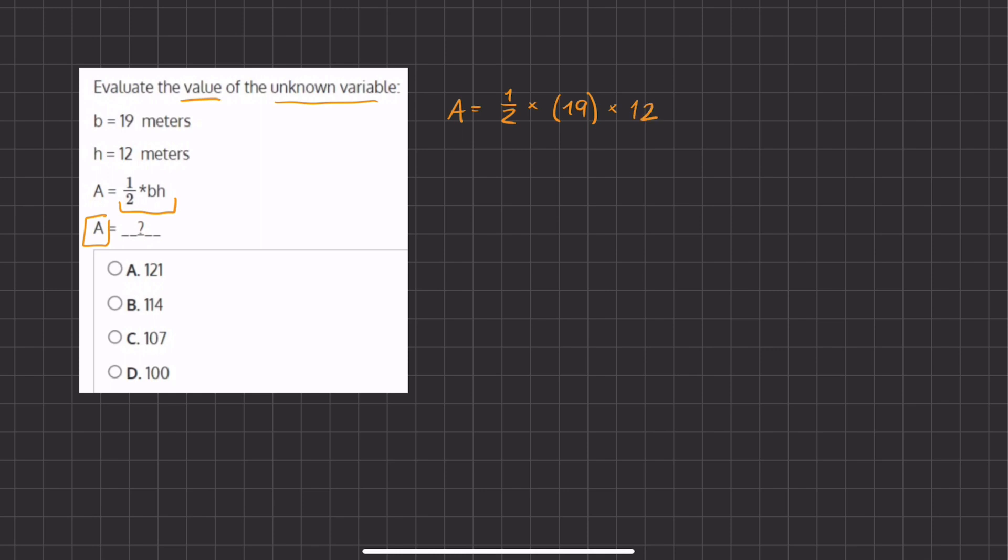All right, so now we have to simplify and solve. So we have this half and we can multiply it by an even number so it divides equally. We can switch the numbers around using the commutative property of multiplication, so we have half times 12 times 19.